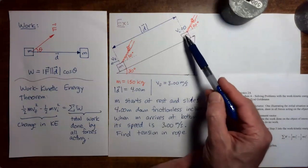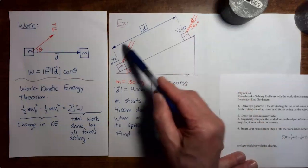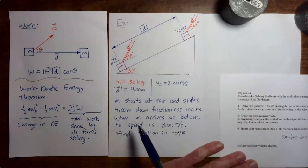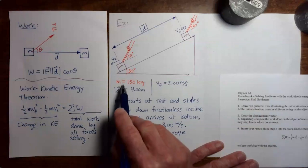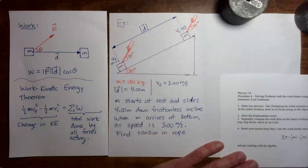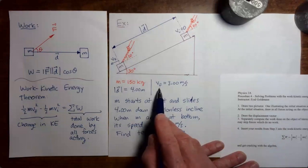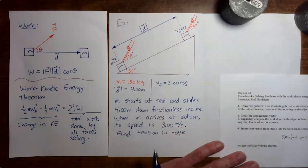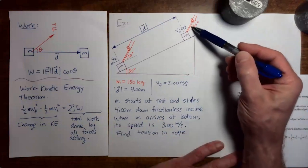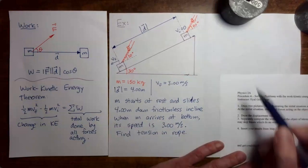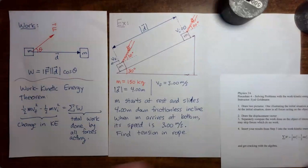The distance that the mass slides down the incline — the magnitude of the displacement — is equal to four meters. The mass is 150 kilograms, and given the final speed of the mass when it gets to the bottom of the incline and this other information, we're going to try to find the tension that was maintained in the rope as the mass was sliding down the incline.